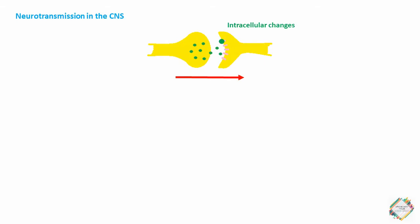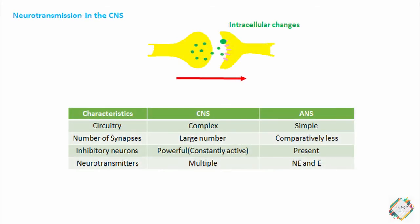However, there are several major differences between neurons in the peripheral ANS and the CNS. The circuitry of the CNS is much more complex than that of the ANS, and the number of synapses in the CNS is far greater. The CNS, unlike the peripheral ANS, contains a powerful network of inhibitory neurons that are constantly active in modulating the rate of neuronal transmission. Additionally, the CNS communicates through multiple neurotransmitters, whereas the ANS uses only two primary neurotransmitters: acetylcholine and norepinephrine.